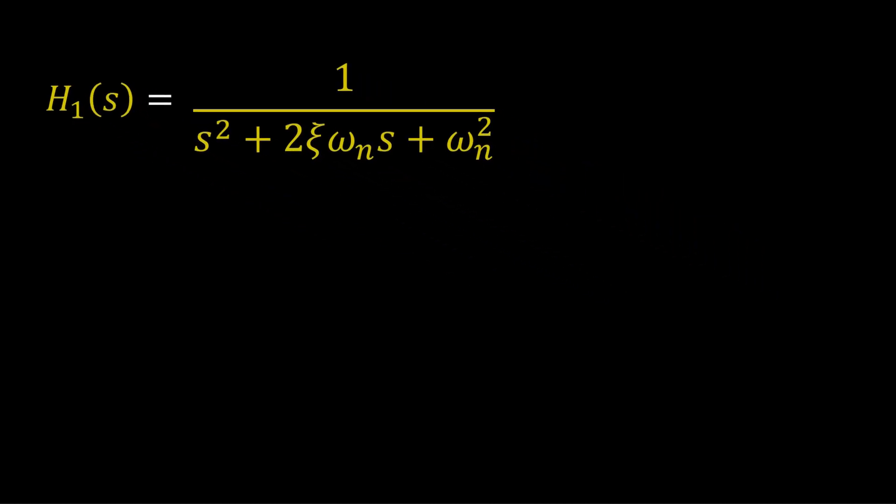The poles are assumed to be complex pairs. That is, the damping ratio is less than one. Therefore, the denominator can be factored and by partial fraction expansion.